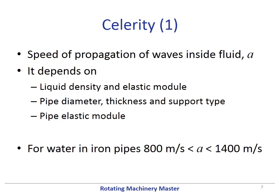The speed of propagation of waves inside a fluid is also called celerity. It depends on the liquid density and its elastic modulus, the pipe diameter, thickness and support type, and the pipe elastic modulus. For example, for water in iron pipes it is something between 800 meters per second and 1400 meters per second, depending on the pipe characteristics.